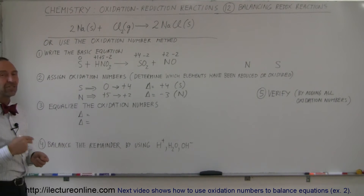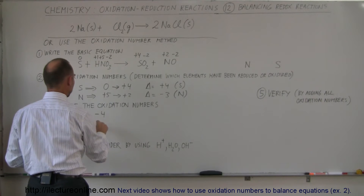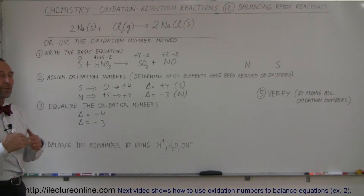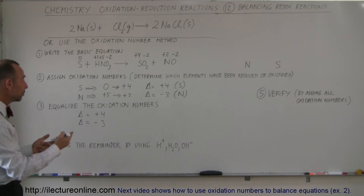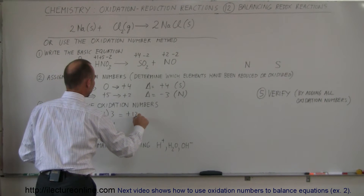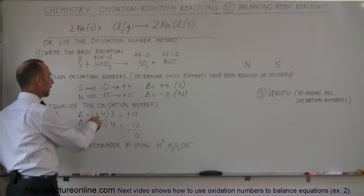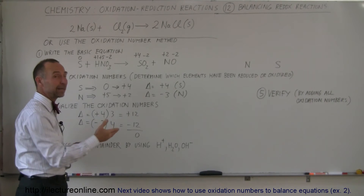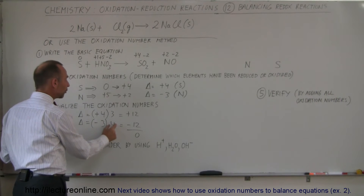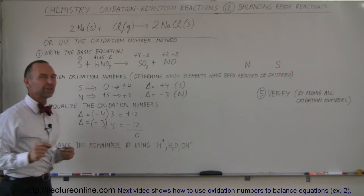For the equation to be balanced, the oxidation deltas have to be balanced as well. We have a delta of plus four and a delta of minus three. We want the increase in oxidation number to equal the decrease. If we multiply the plus four by three and the minus three by four, we get plus twelve and minus twelve, which add to zero. So the element with an increase of plus four needs a coefficient of three, and the element with a reduction of minus three needs a coefficient of four.